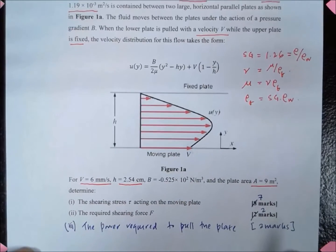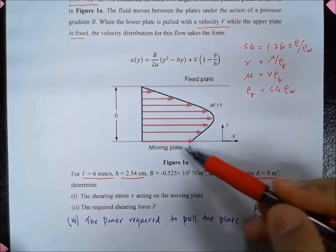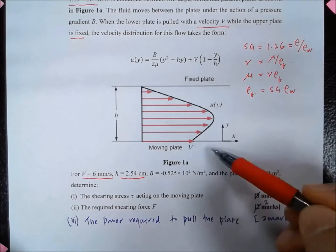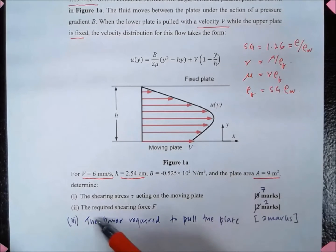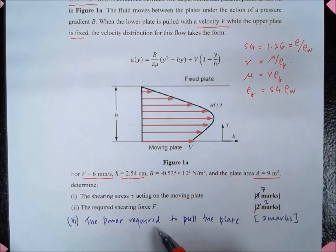Rho fluid is given by St multiplied by rho of water. There are three things we are asked to determine: first, the shearing stress tau acting on the moving plate; second, the required shearing force to pull the plate; and third, the power required to pull the plate.